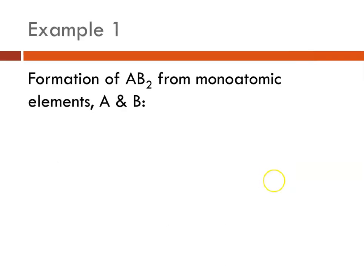So let's look at a first example. If we were forming the compound AB2 from monatomic elements A and B we would add 1A plus 2Bs to get AB2. So that would be balanced. Easy peasy.